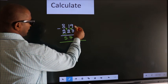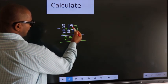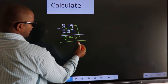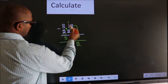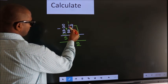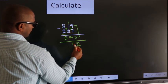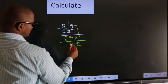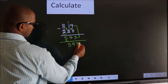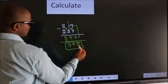Now add these 2. 9 plus 3 equals 12, so write 2 and carry 1. 1 plus 1 plus 7 equals 9. This 5 stays as it is. So this is our answer.